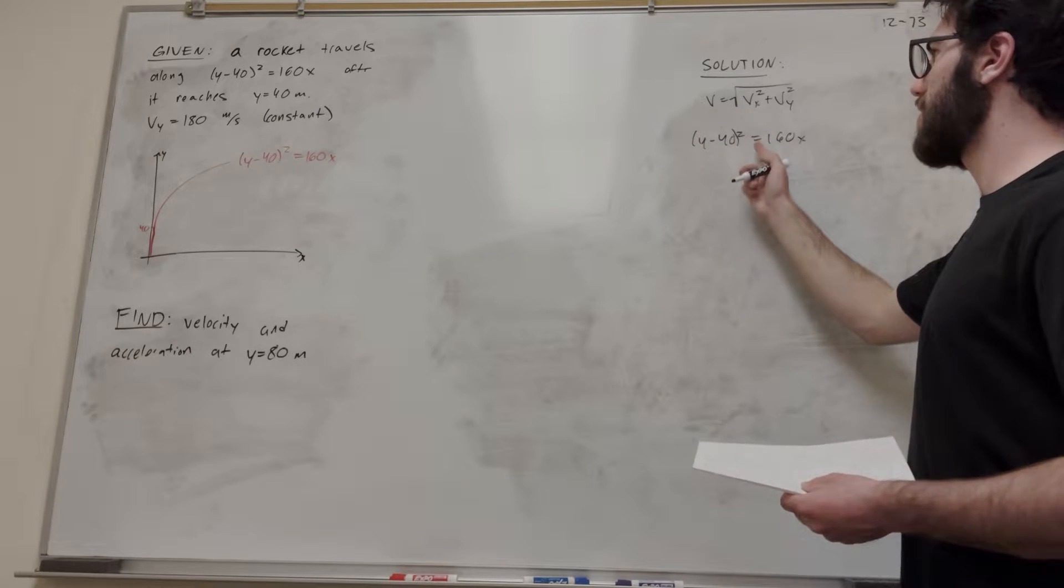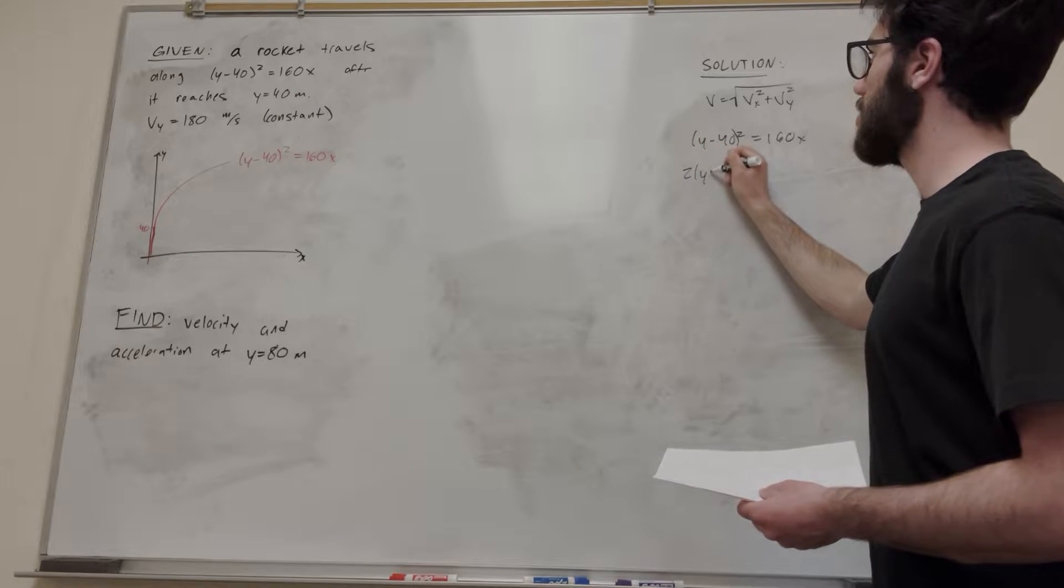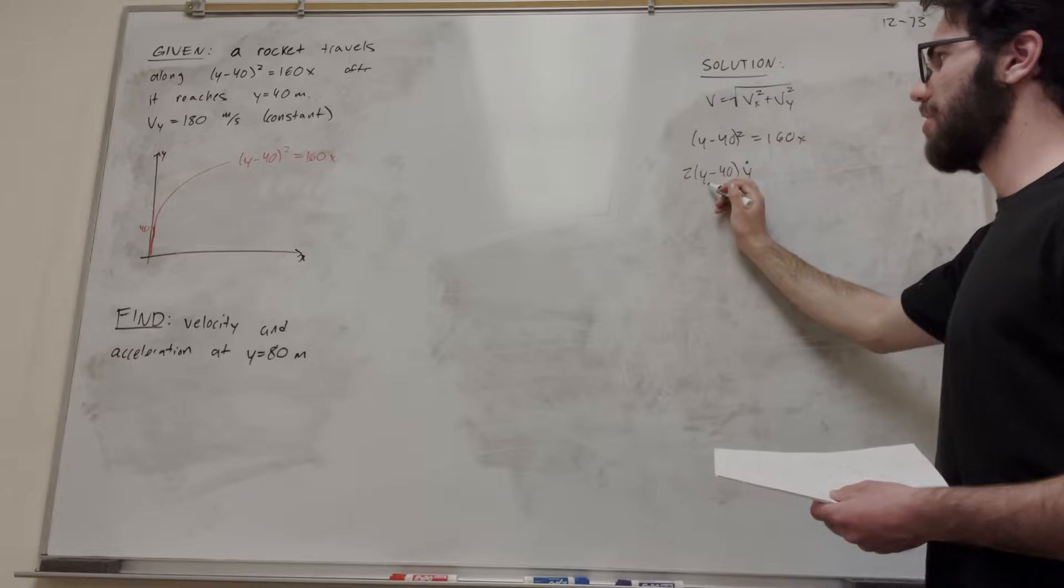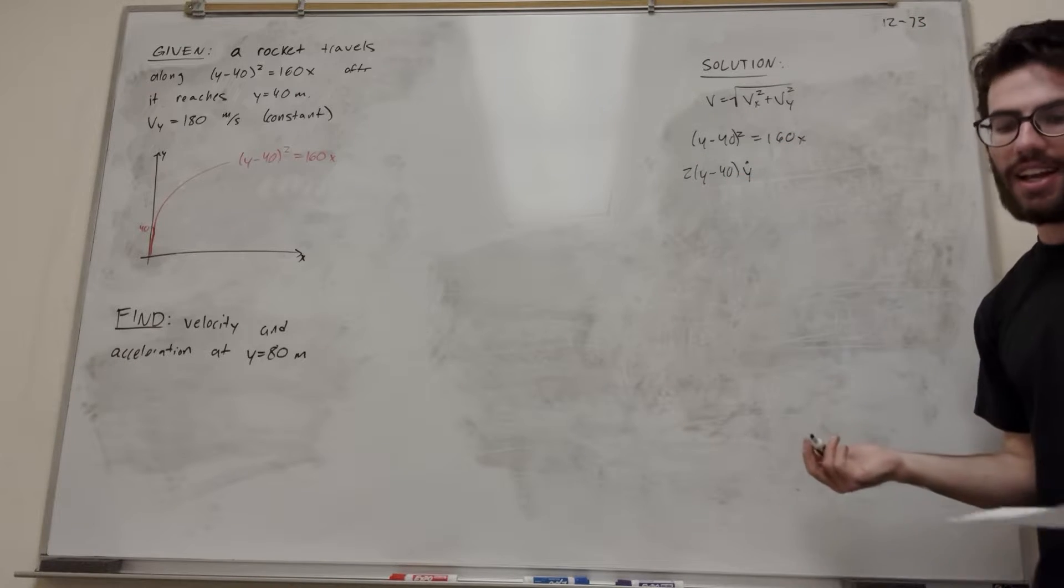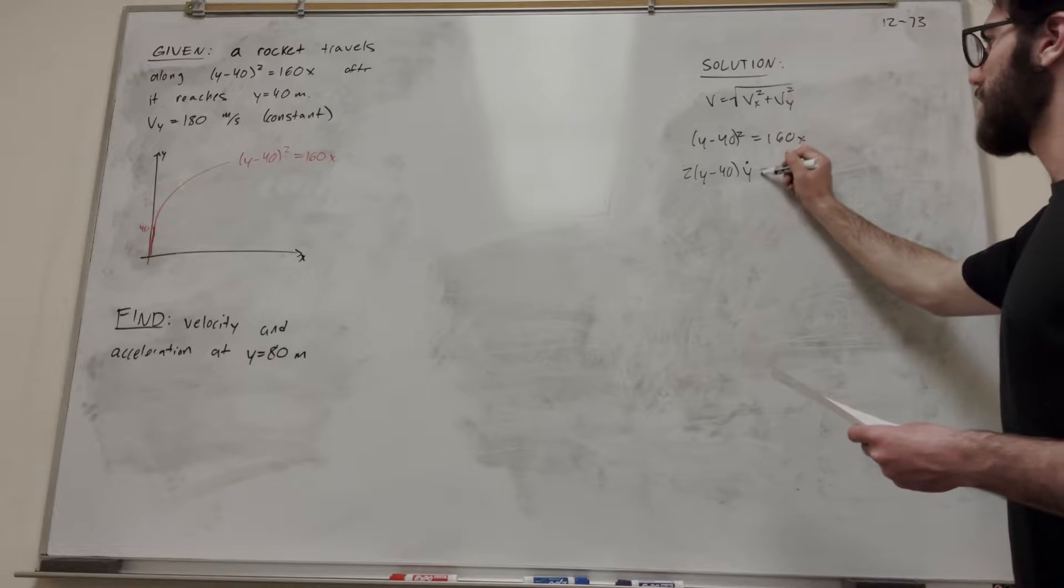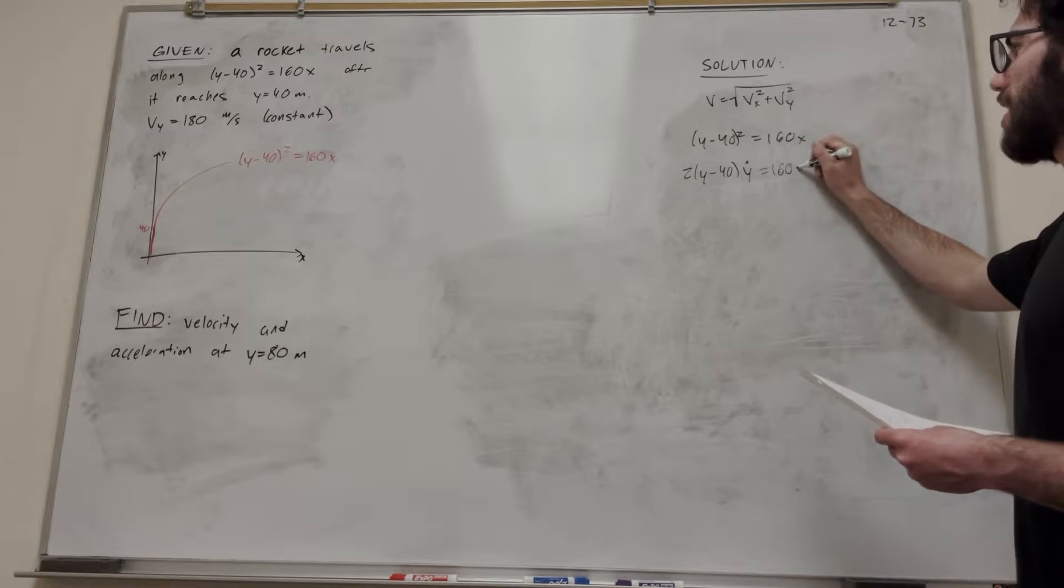We're taking the derivative of this, so that 2 is going to come out front. It's going to be 2 times y minus 40, and then we attach that y dot because of the chain rule. We have to take the derivative of the inside. Then this side is just going to become 160, and that x becomes x dot.